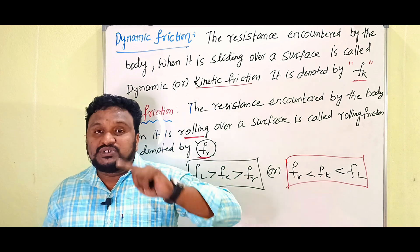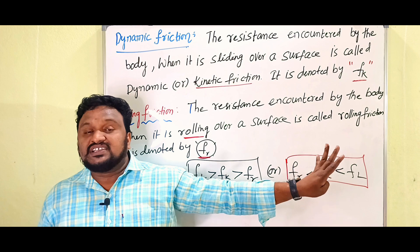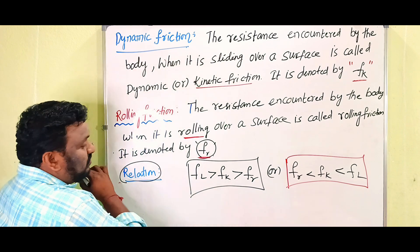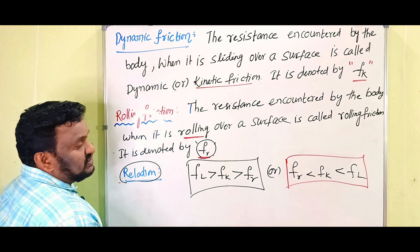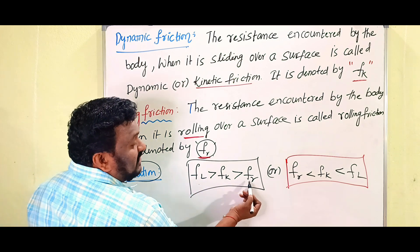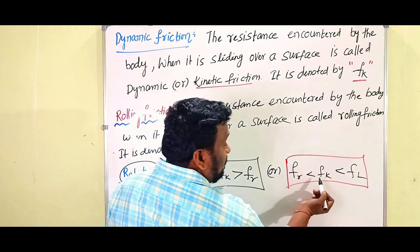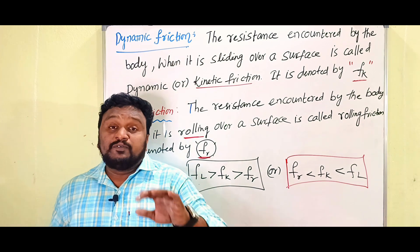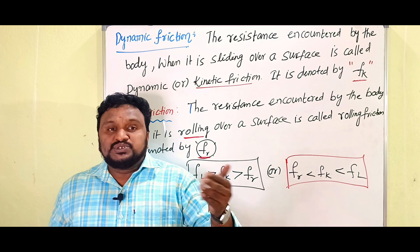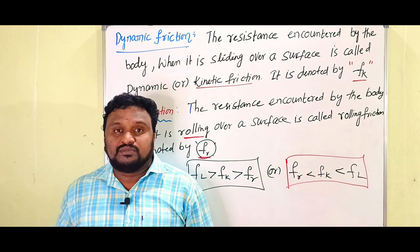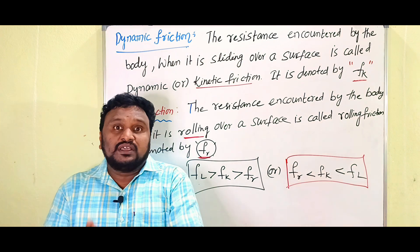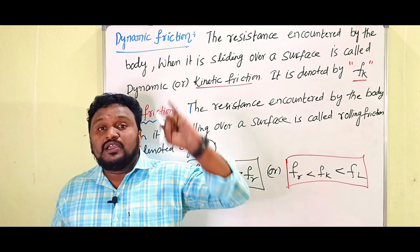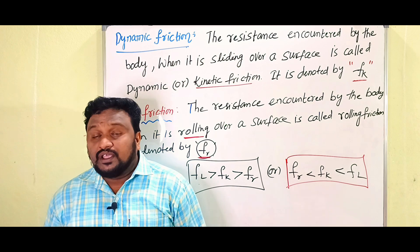So this is about limiting friction, dynamic friction, and rolling friction. The relation between them is: FL is greater than FK, and FK is greater than FR. That is, rolling friction is the least, followed by kinetic friction, and static or limiting friction has the greatest value among the three types.